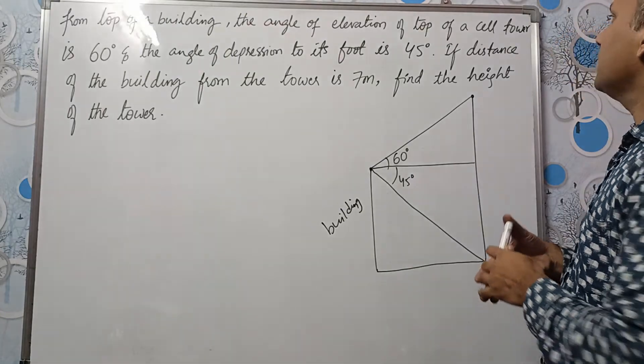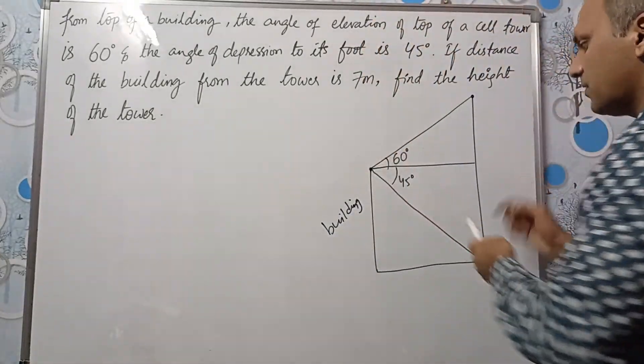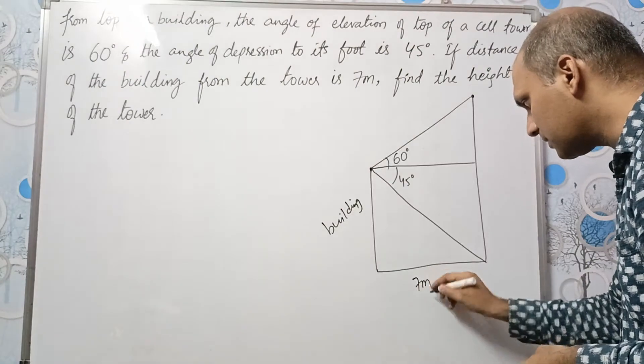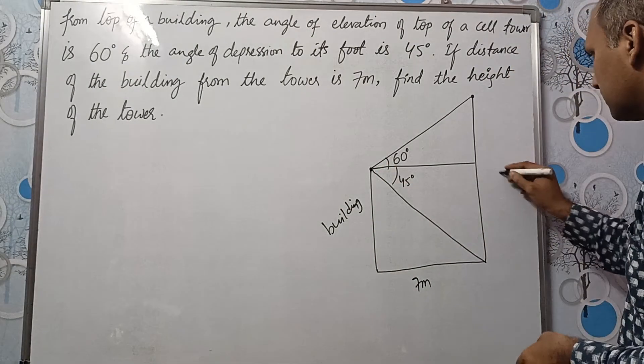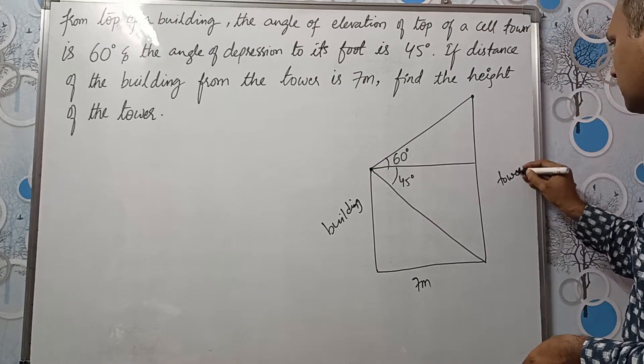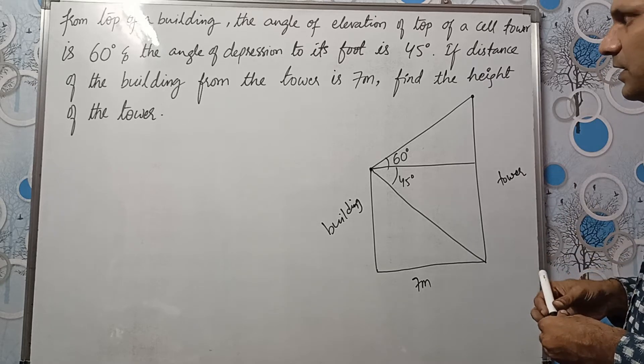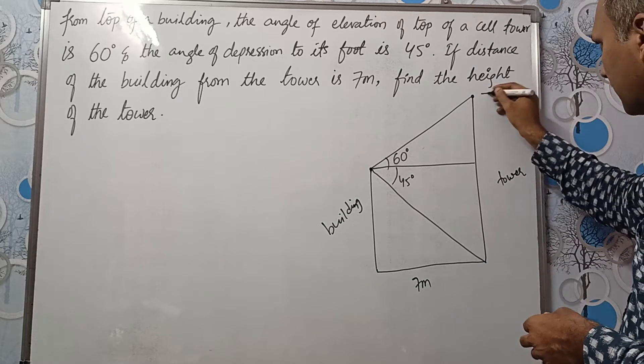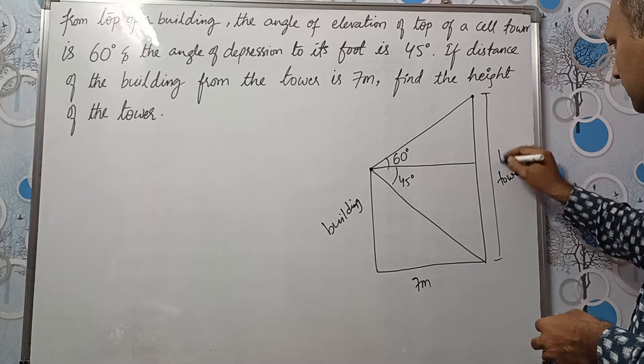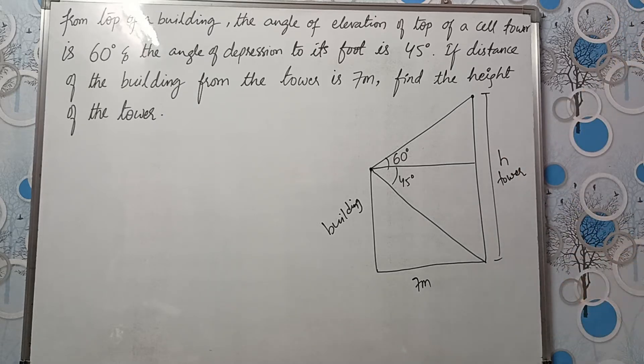Okay. What do we need to find? If the distance of the building from the tower is 7 meters. So this is 7 meters. This is building and this is the tower. Find the height of the tower. We need to find the height of this tower. Let it be h.